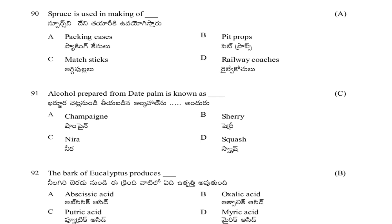Spruce is used in making of: packing cases, pit props, matchsticks, or railway coaches. The answer is packing cases.